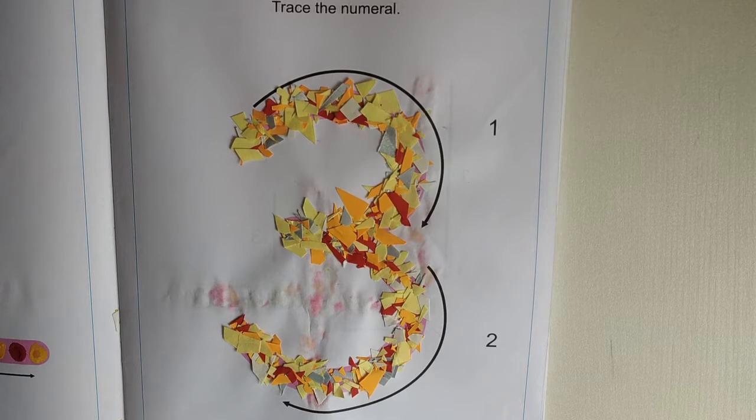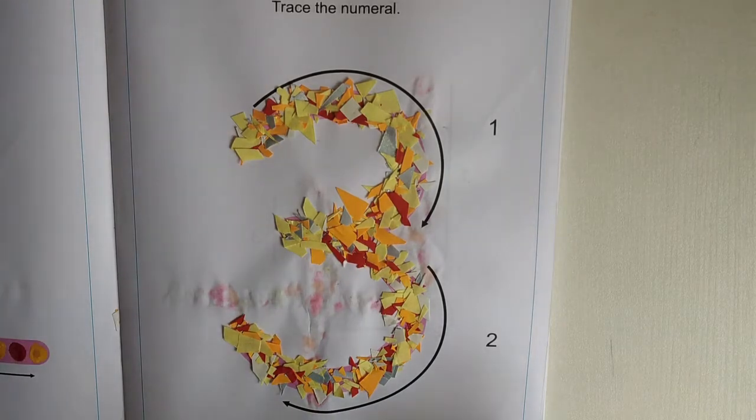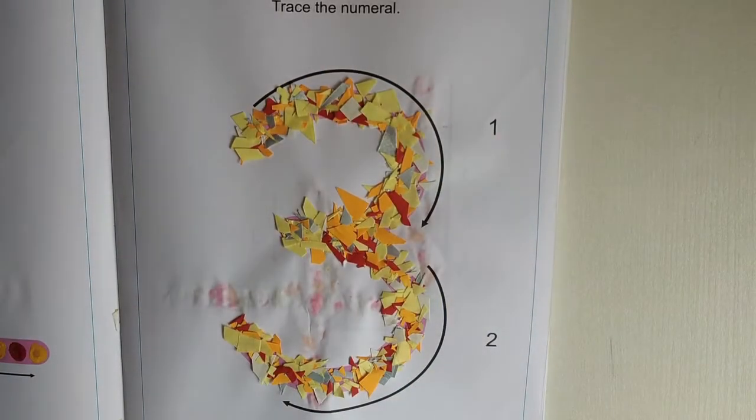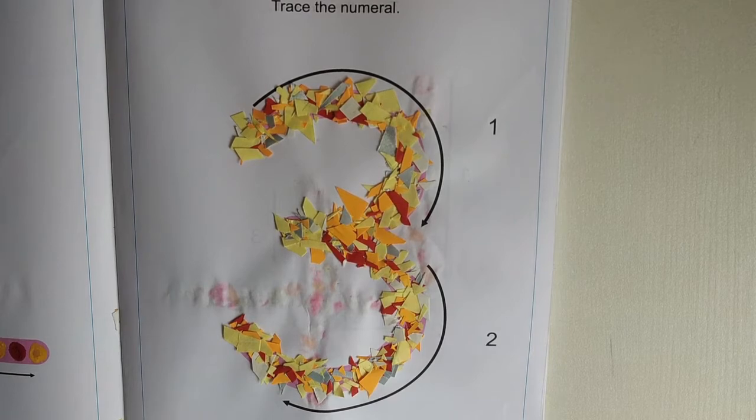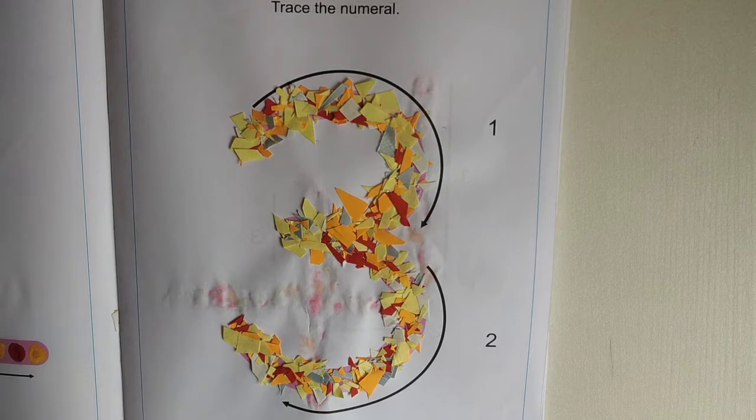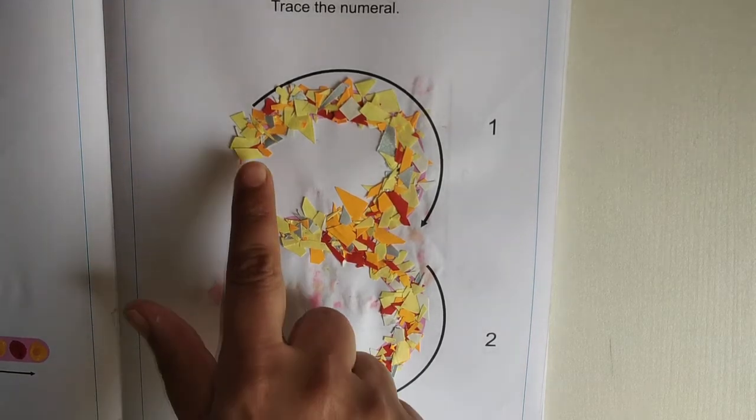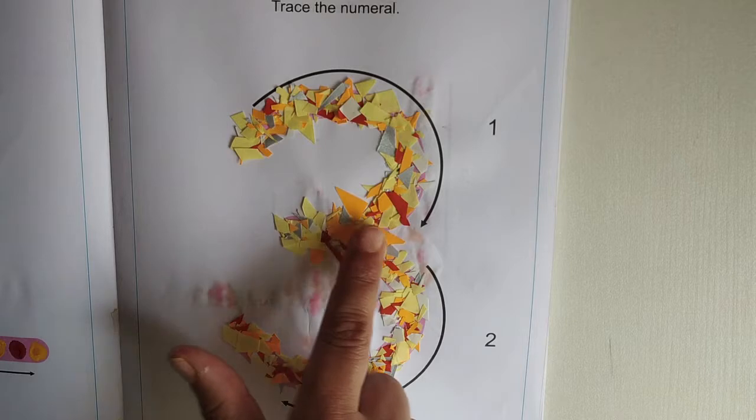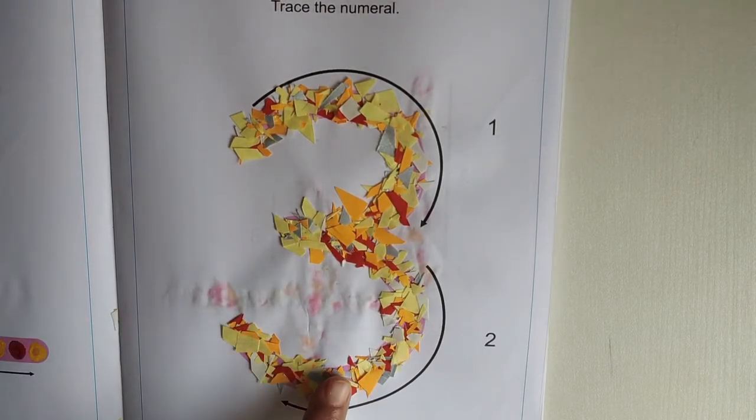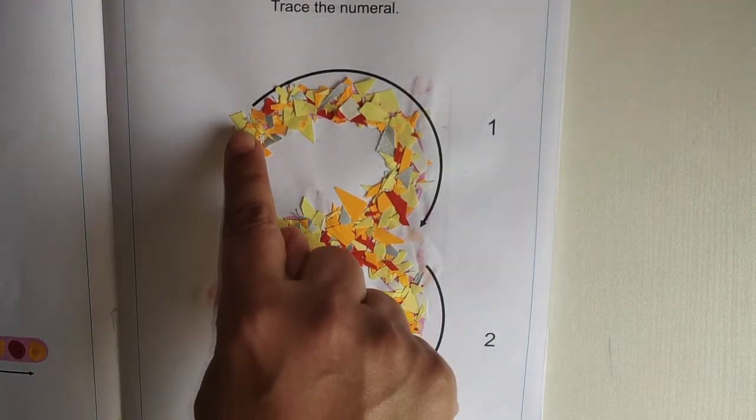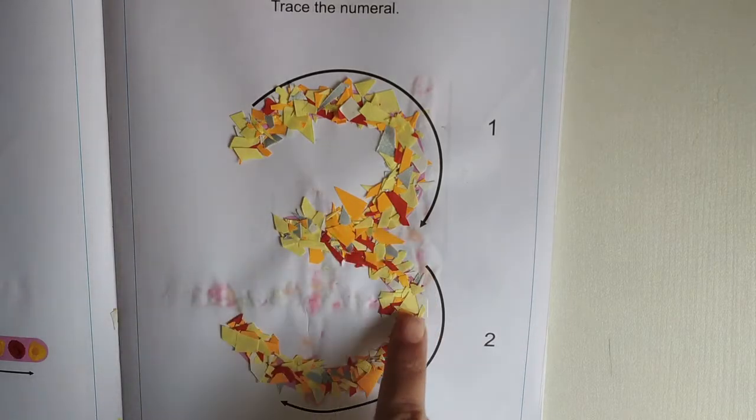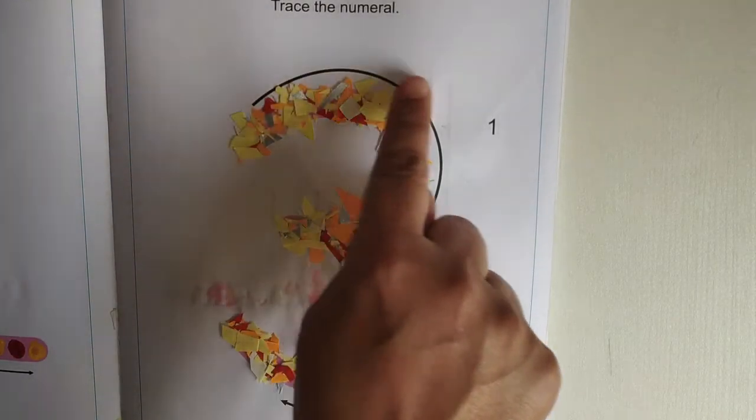Children, see my number 3 is completely dried. Now I am going to take my pointer finger and trace number 3. See? Three, three, three.